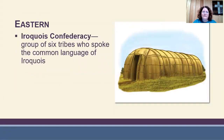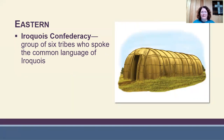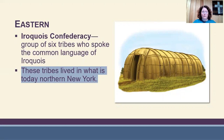The Iroquois Confederacy is found more up in the northern part of the eastern region — the New England area, Virginia area. They were a group of six tribes who spoke the common language of Iroquois. They were unique in that most tribes did not come together in a big government like this. The Iroquois Confederacy did differently — they came together, all spoke the same language, and made up almost a government within itself. They lived in what is today northern New York.